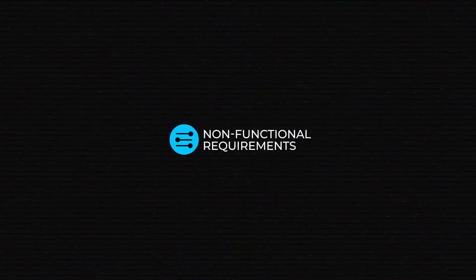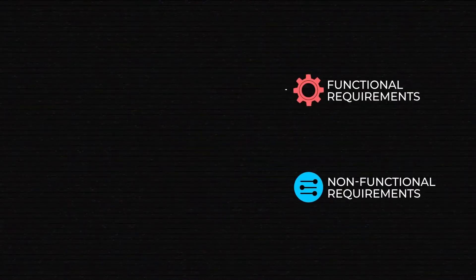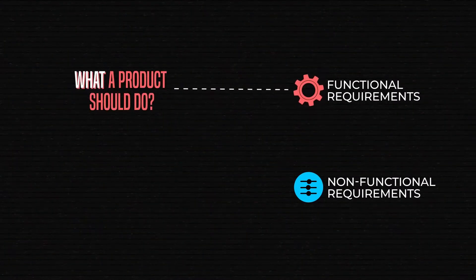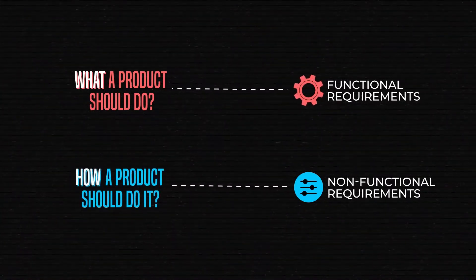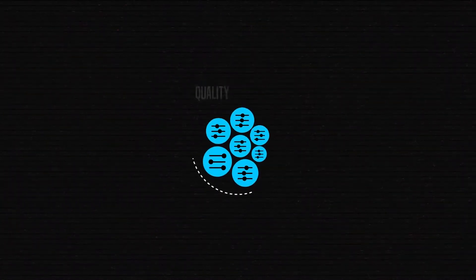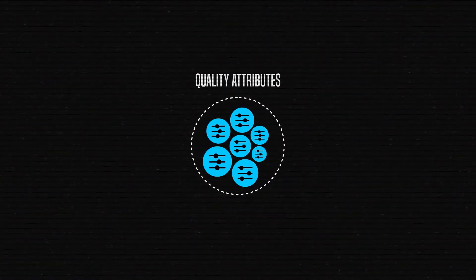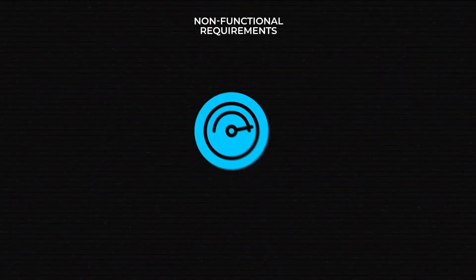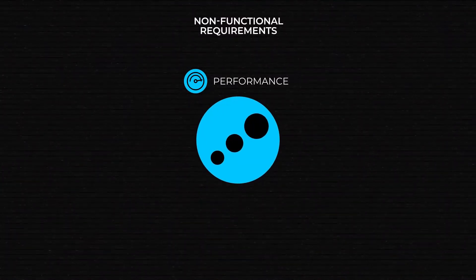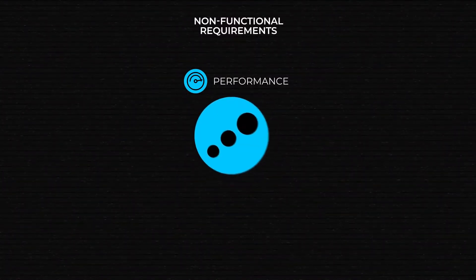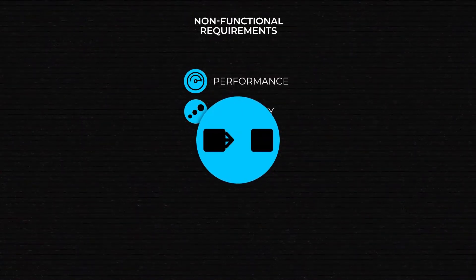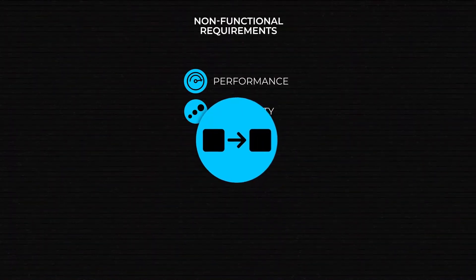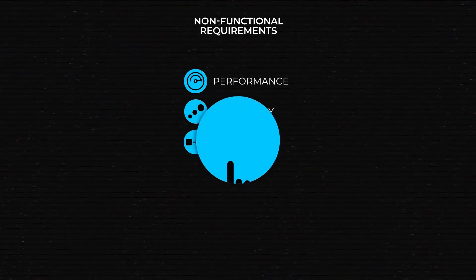What about Non-Functional Requirements? Things are a bit more complicated there. While Functional Requirements specify what a product should do, Non-Functional Requirements specify how a product should do it. Also known as Quality Attributes, these requirements describe the expectations about system properties. Some of the most common examples are Performance — or how fast the software responds — Scalability, or how well it holds up under a certain load, and Portability, as a measure of how easy it is to port software into another device or operating system.